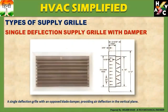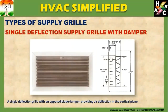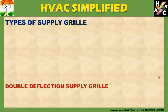Next हमारे होती है Single Deflection Supply Grill with Damper। A Single Deflection Grill with an Opposed Blade Damper provides a Deflection in a Vertical Plane। यहां पर उसी Single Deflection Supply Grill को एक Opposed Blade Damper Attach किया गया है — तो यह Without Damper और With Damper दोनों प्रकार में Single Deflection Supply Grill design किये जाते हैं।